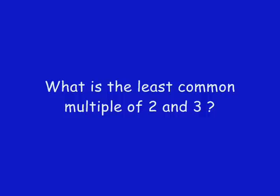Here's a math question: we have to find the least common multiple of two and three. What's the answer? Six. Six is the least common multiple — twelve is a multiple too, but you want the smallest one.